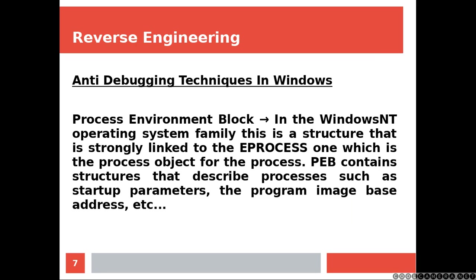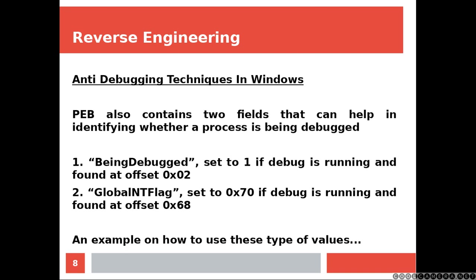Process Environment Block. In the Windows NT operating system family, this is a structure that is strongly linked to the eProcess one, which is the process object for the process. PEB contains structures that describe processes such as the start-up parameters, the program image base address, and so on. PEB also contains two fields that can help in identifying whether a process is being debugged.